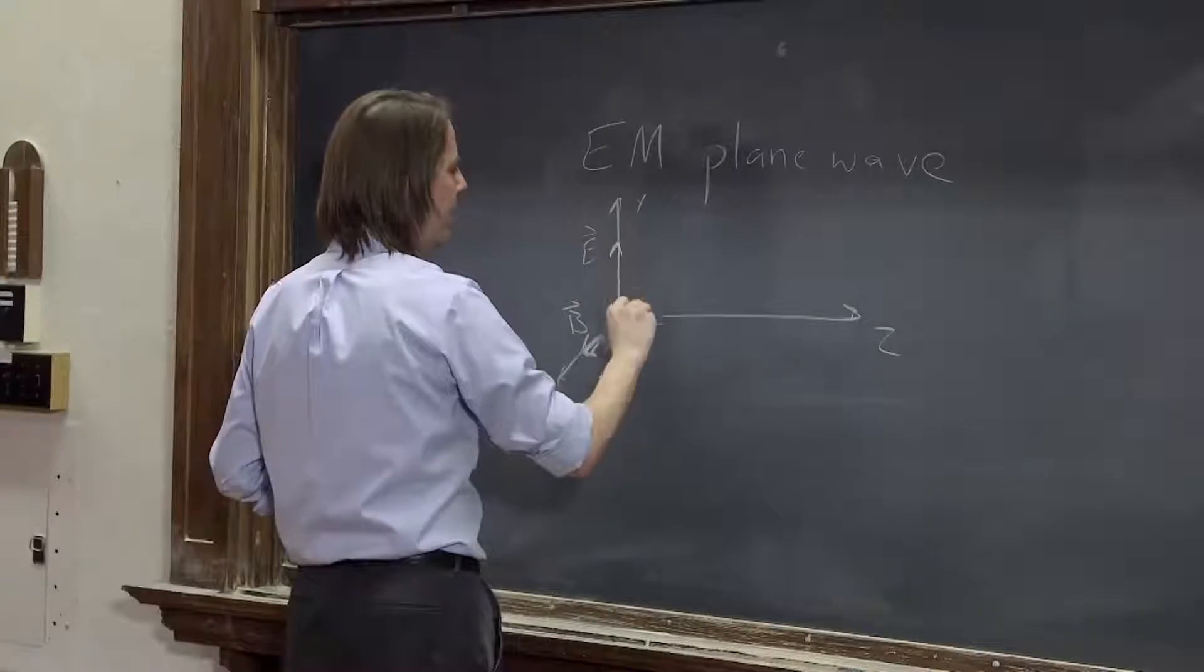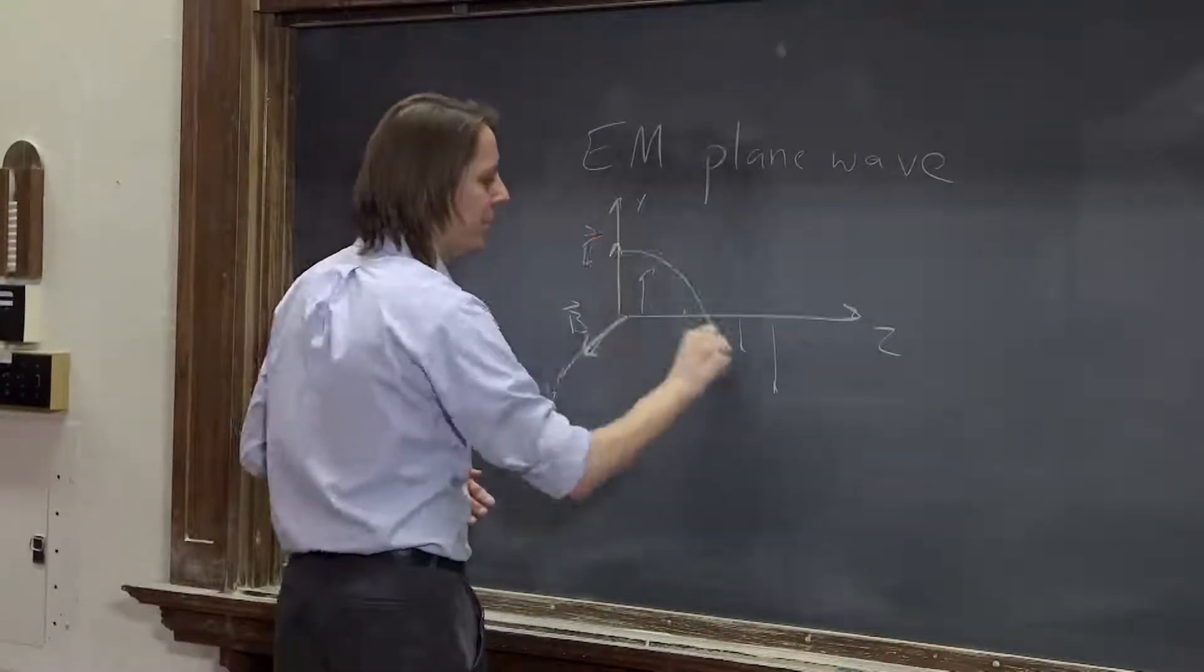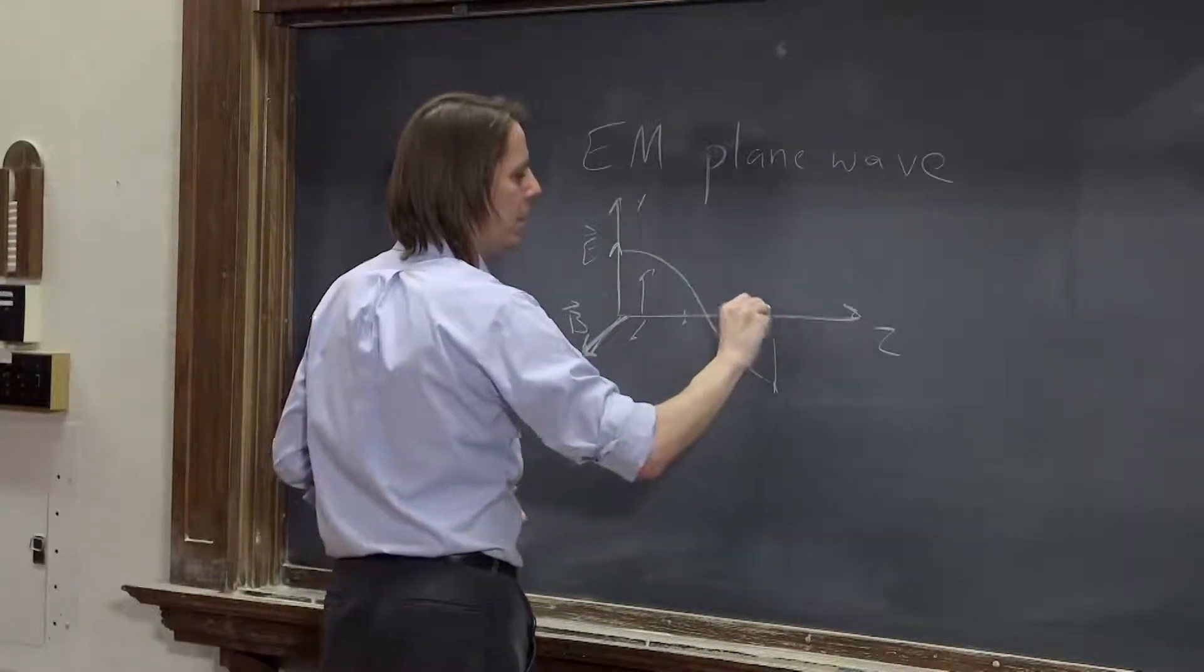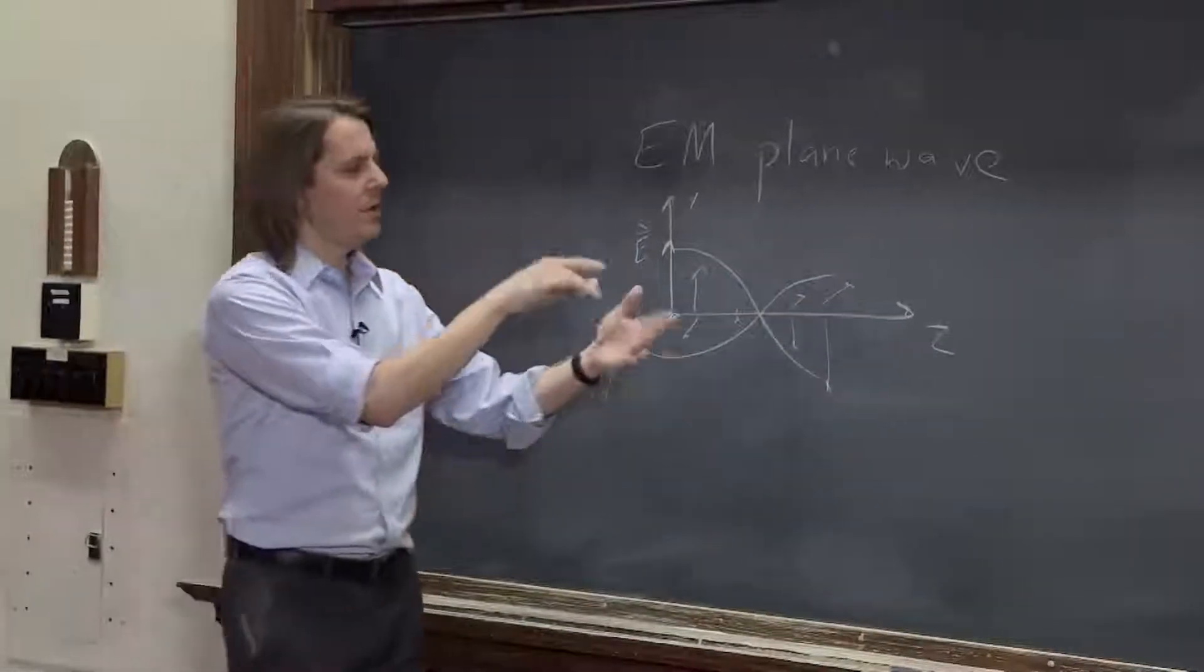And they would both vary sinusoidally in time and in phase. So it would come down. This would come down like that. And then this one would get smaller and go like that.